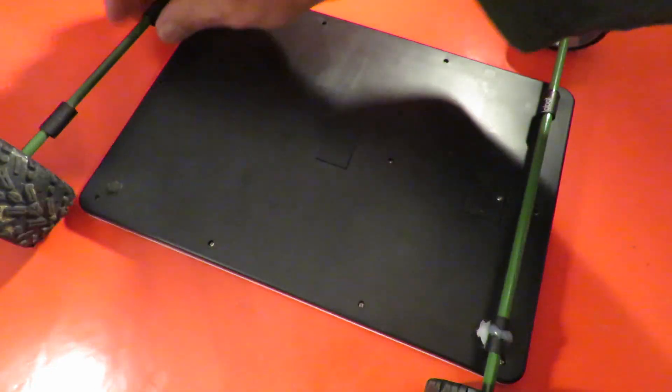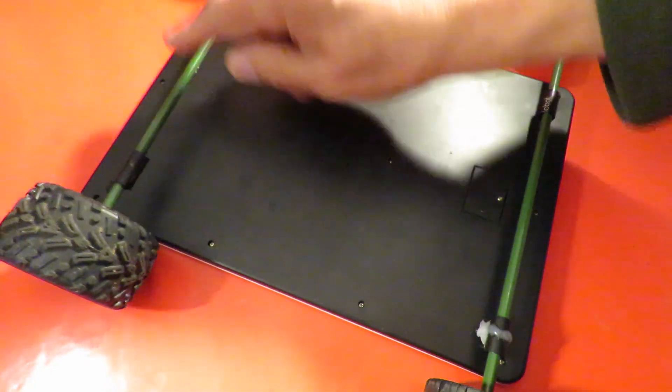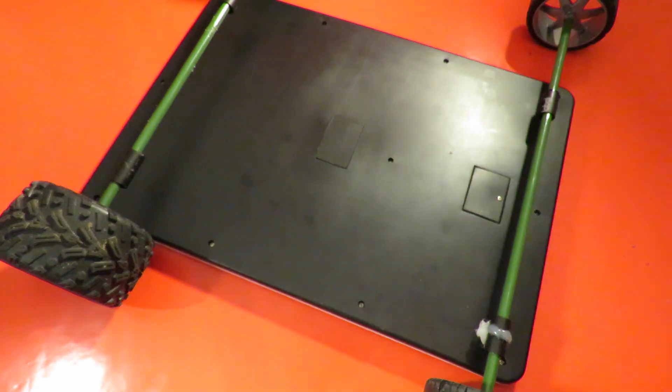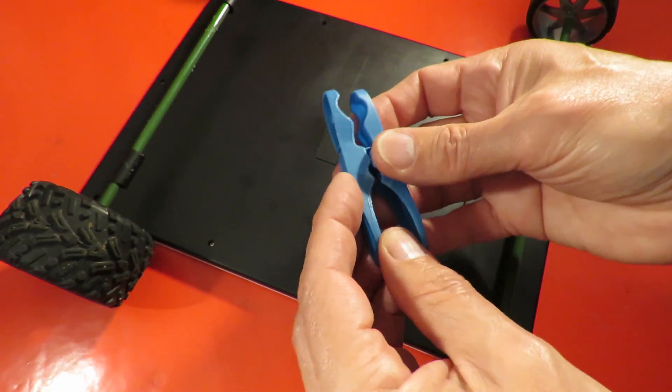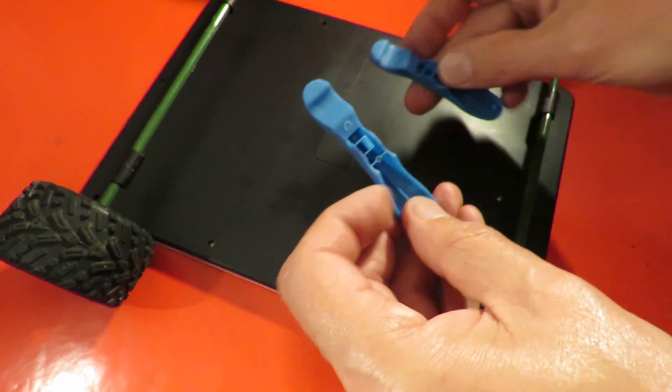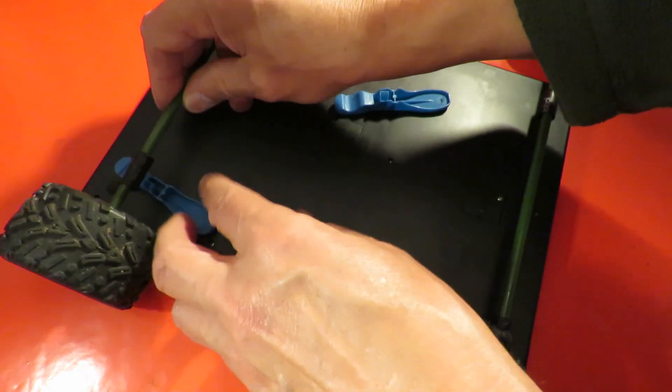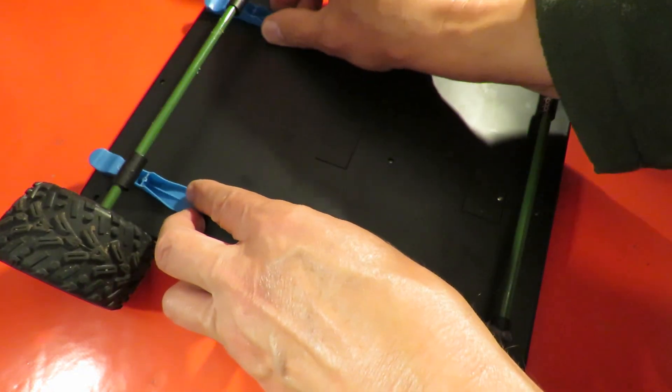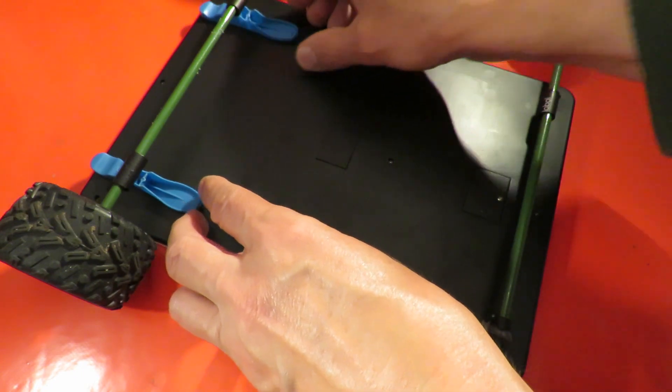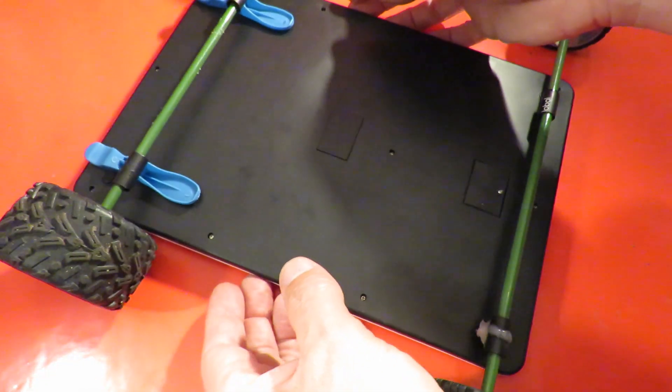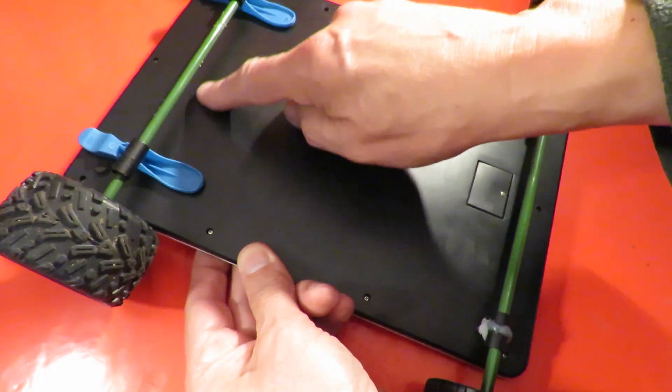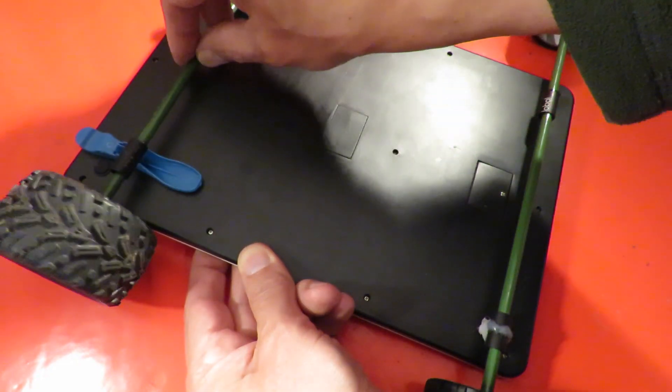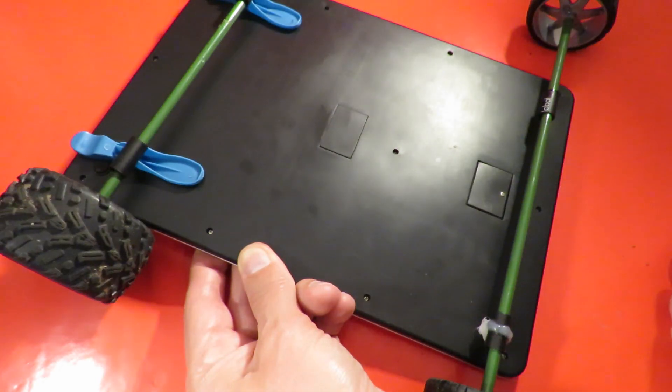But we need enough space to wind a rubber band around them, so I've got a clothes peg here that I'm going to use underneath the back just to raise the axle off the flat plate so we've got enough room to wrap the rubber band around it. And that's it, so I'll just hot glue that all in place and that'll be our rubber band powered car.